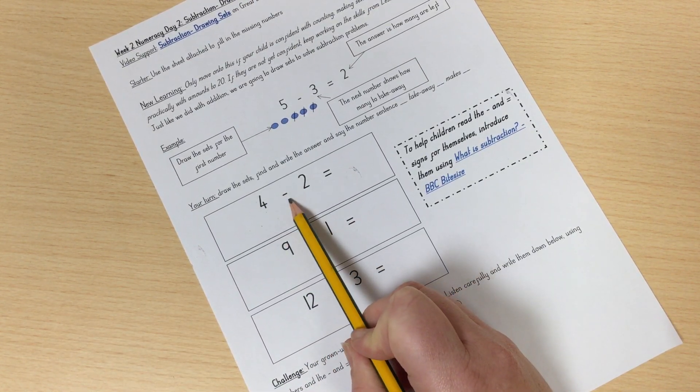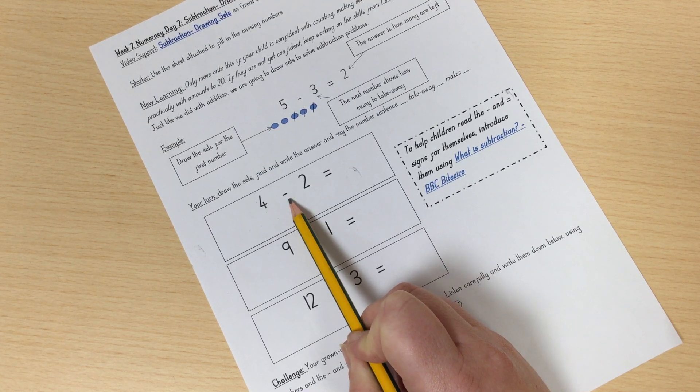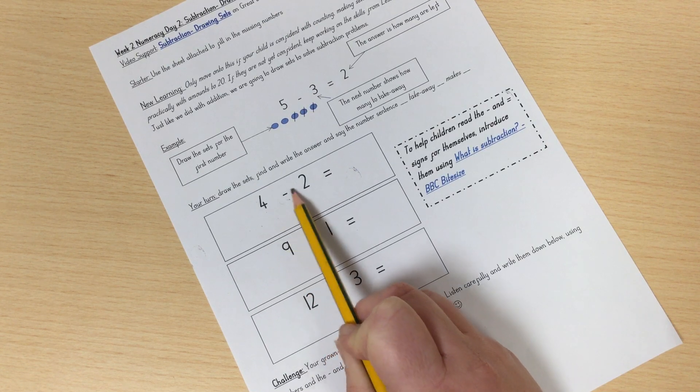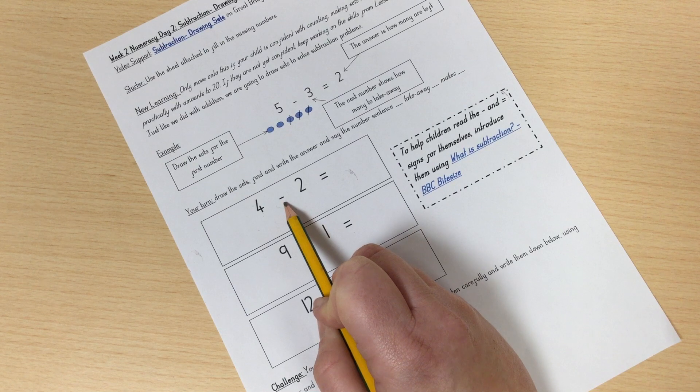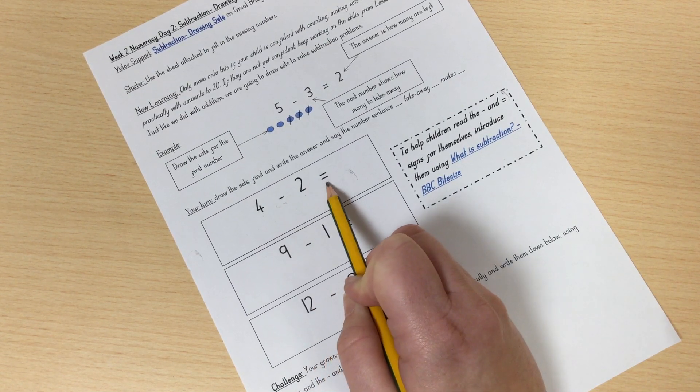Four. What does that mean? Be careful. Last week we did addition, but this week we are taking away. So this sign here is the take away sign. So this says four take away two.